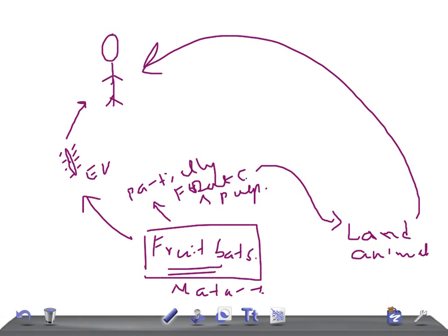This is how it's transmitted. Remember, the fruit bats, if they are infected with the Ebola virus, they do not produce any disease, or they can produce the disease. Both are possible. They are the natural host. When they drop the partially eaten fruits or pulp, they are eaten by the land animals and they get infected. When this animal comes in contact with the human being, the human being gets infected.